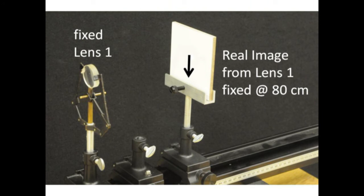Begin by placing the screen at the 80 centimeter position and adjusting the first converging lens until a sharp image is formed. Lock down the converging lens 1 and never move it. This ensures that the image from lens 1 will remain at 80 centimeters throughout the experiment.